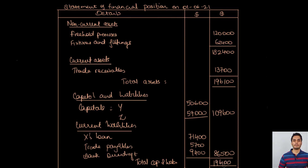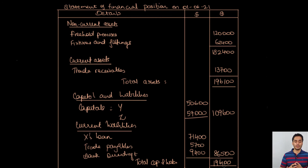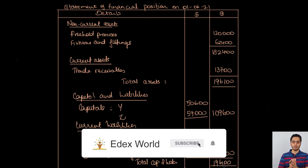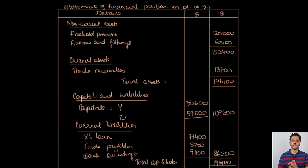The total of our capital and liabilities is 196,100, which matches our total assets — confirming we've covered all the entries in our balance sheet. I hope this video was useful and you've understood how to make entries for retirement of a partner. If you enjoyed the video, please like and share it, subscribe to the channel, and press the bell icon. See you soon with a new video.